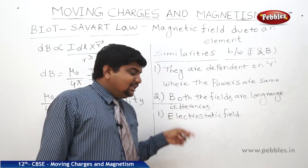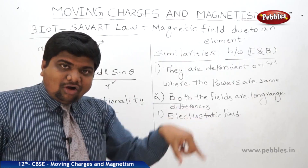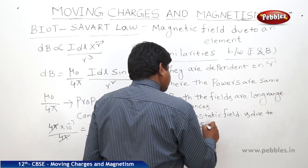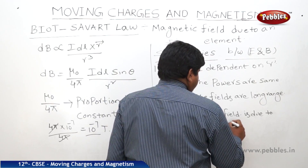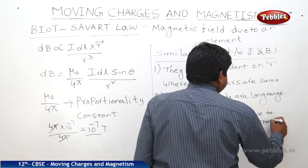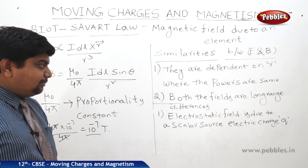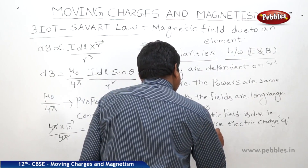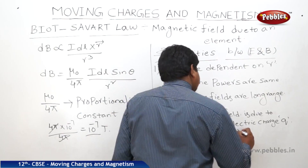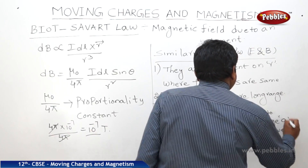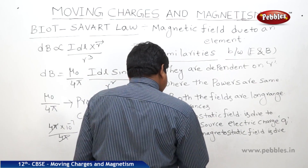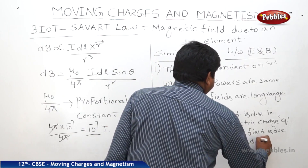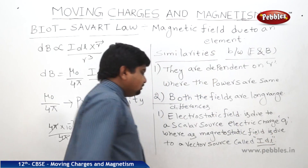But magnetic field is not like that. Magnetic field is due to a vector source called IDL, meaning current along the length. Whereas the magnetostatic field is due to a vector source called IDL. This is one of the differences.